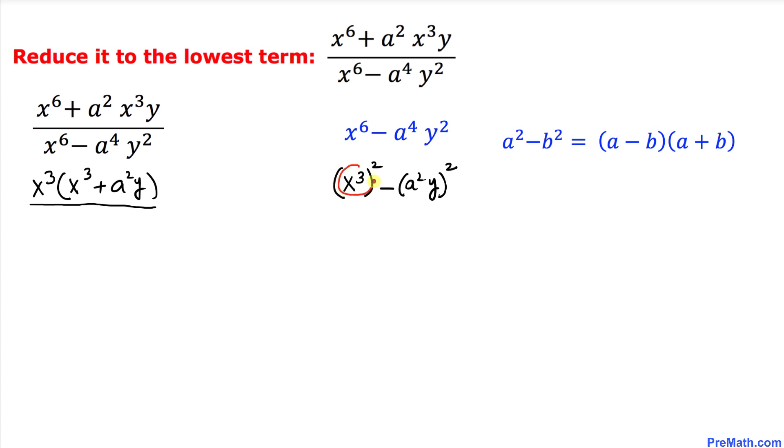Let's assume that this part is our a and this part is our b. We can write this as (x^3 minus a^2 y) times (x^3 plus a^2 y). Therefore, this denominator part can now be written as this.